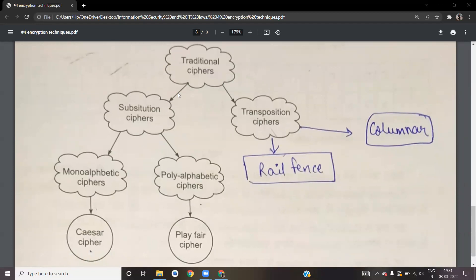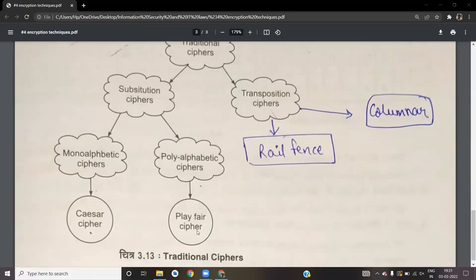You will see traditional ciphers. There are substitution ciphers and transposition ciphers. Within substitution, there are mono-alphabetic ciphers and poly-alphabetic ciphers. Examples include the Caesar cipher and the Playfair cipher.